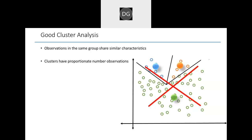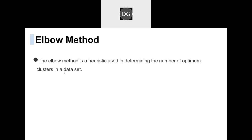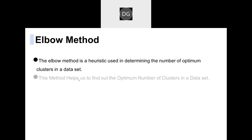So this is what we call good cluster analysis — it should have some shared similar categories. How will I decide how many clusters to give? So that I will get the best cluster or best centroid. For this, we will use a method called the ELBOW method.